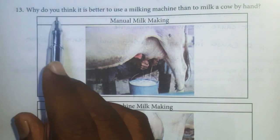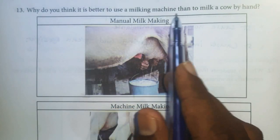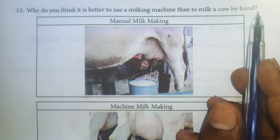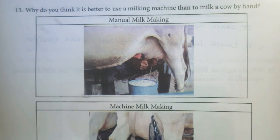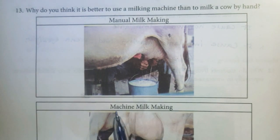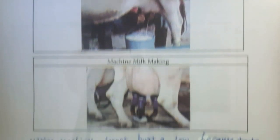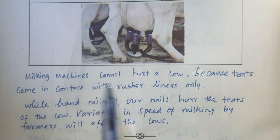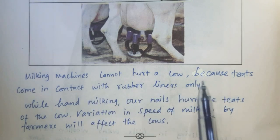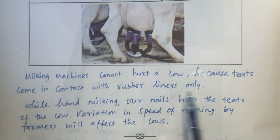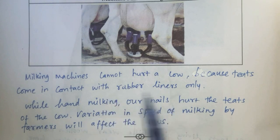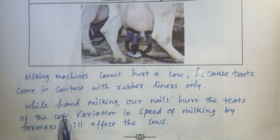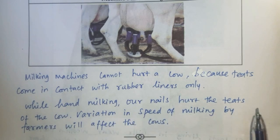Thirteenth one: Why is it better to use a milking machine than to milk a cow by hand? Machine milking is better. Milking machines cannot hurt a cow because the teats come in contact with rubber liners only. In hand milking, our nails can hurt the teats of the cow.